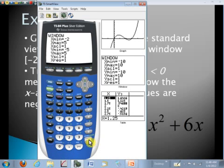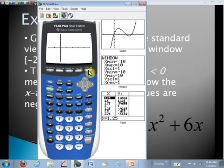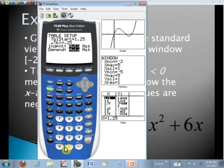Now let's go ahead and hit the table set. And we'll start tracing this graph. Let's start it at negative 2 where our view screen started. And let's go in increments of one half. So I'll go ahead and hit enter.